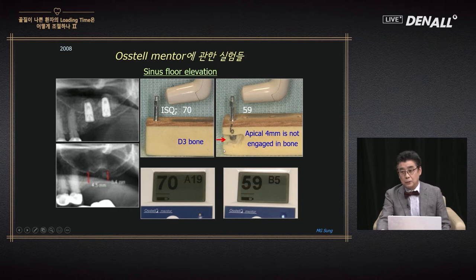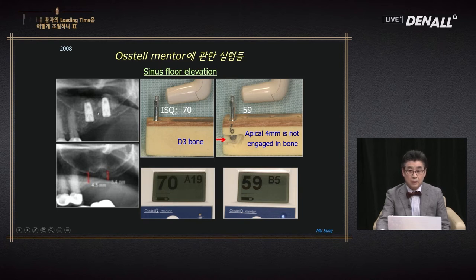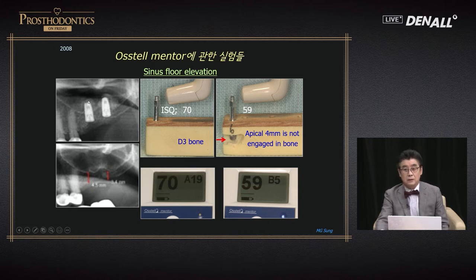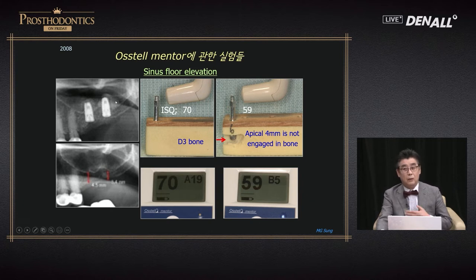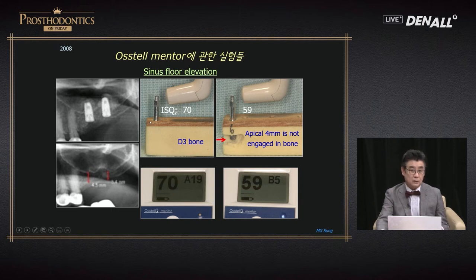Going to the opposite direction — we placed a 10mm implant with about 4mm with no engagement. So there was a kind of hole, and we did a sinus graft. In the beginning, there is no engagement in the bone. As grafting matures and becomes solid, and there is also integration, there should be a change. From 59 to 70, there is a big difference. So after sinus grafting, you can feel how the graft matures and how osseointegration progresses. For this type of defect or sinus graft cases, Osstell Mentor is very helpful.